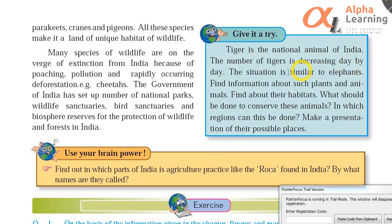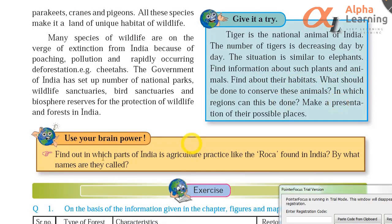To find information about such plants and animals, find about their habitats — you can do it on the internet. Find out in which part of India agricultural practice like roca is found — the answer is the Jhum cycle, which is practised in Madhya Pradesh and the northeast by various names. This chapter is now finished.